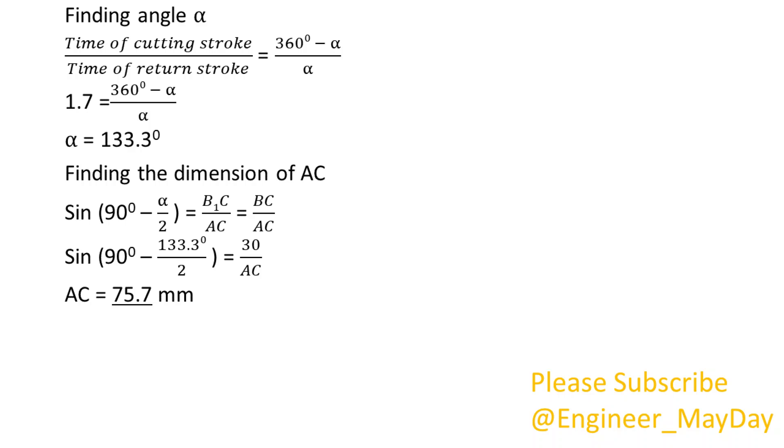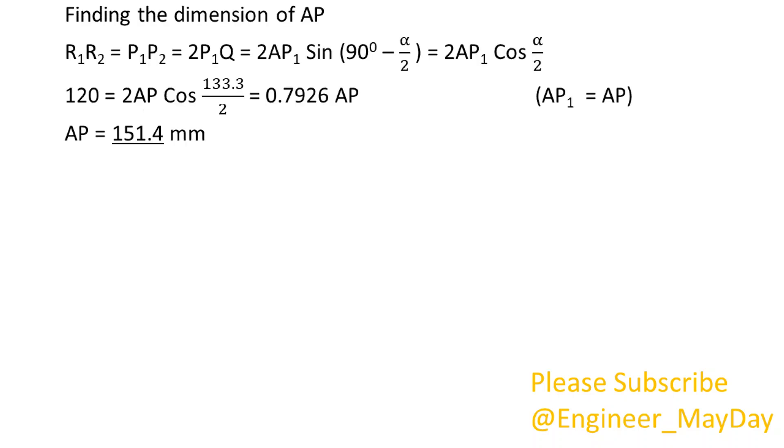Finding the dimension of AC. AC equals 75.7 millimeters. Finding the dimension of AP. AP equals 151.4 millimeters.